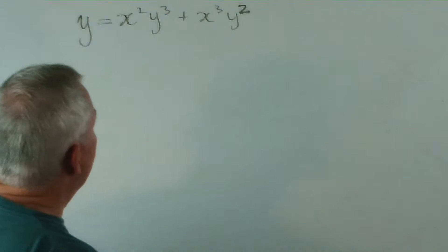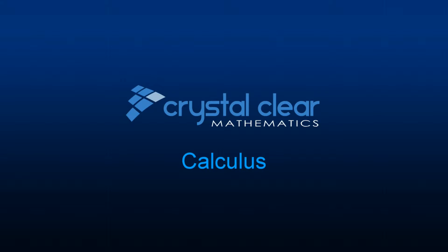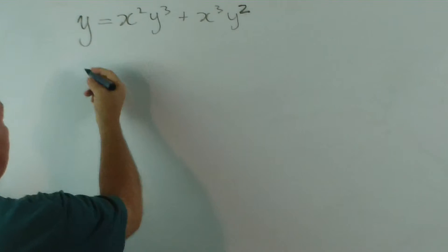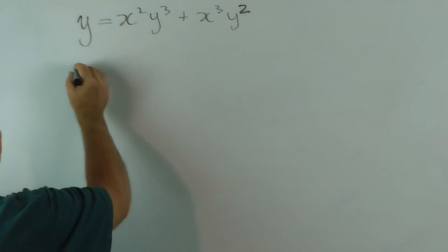Now, how do we find the derivative? We're taking the derivative of both sides with respect to x. The derivative of y with respect to x is y dash.